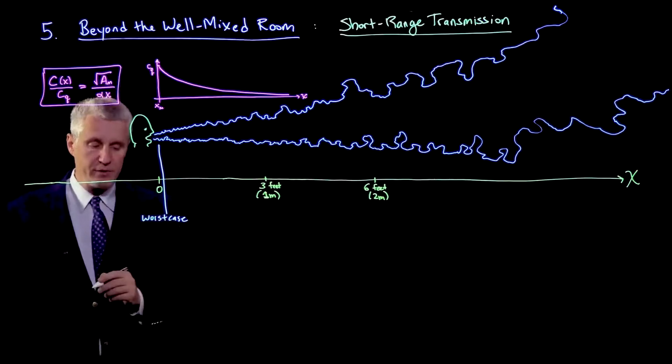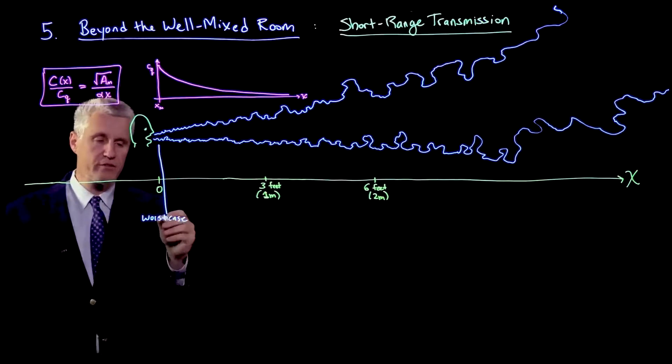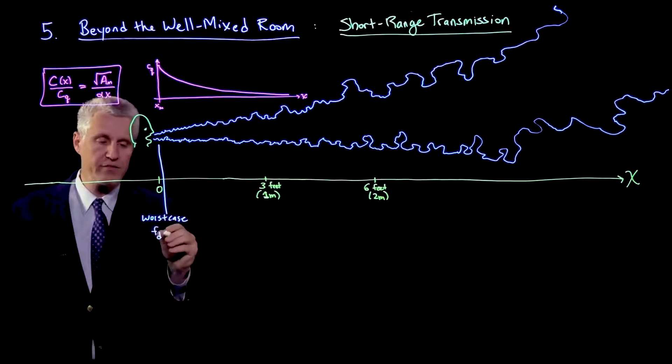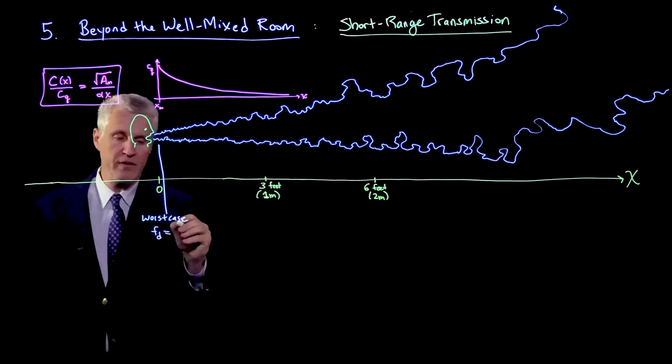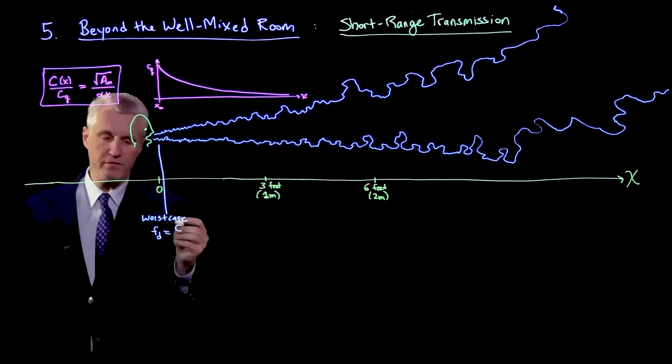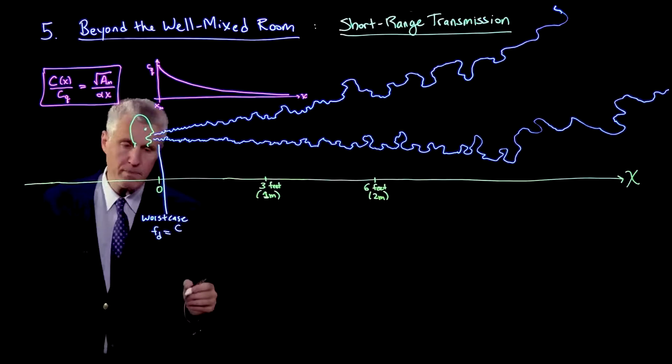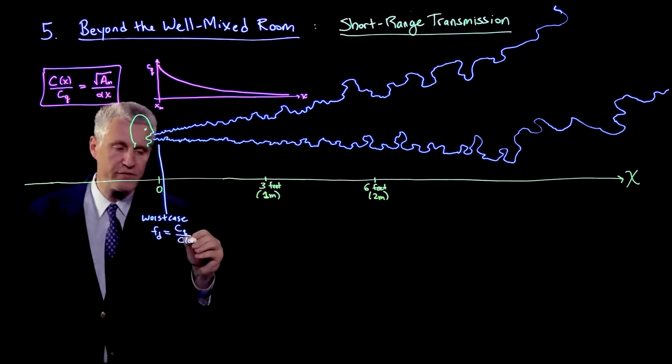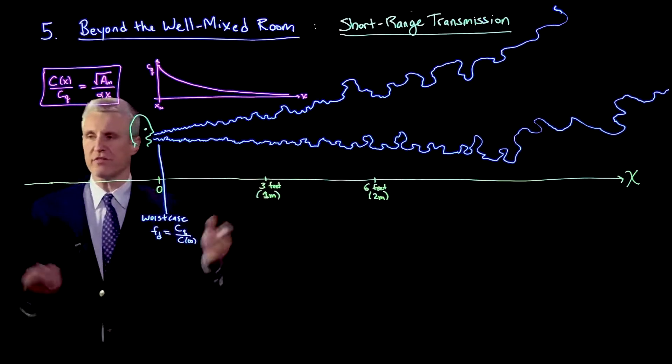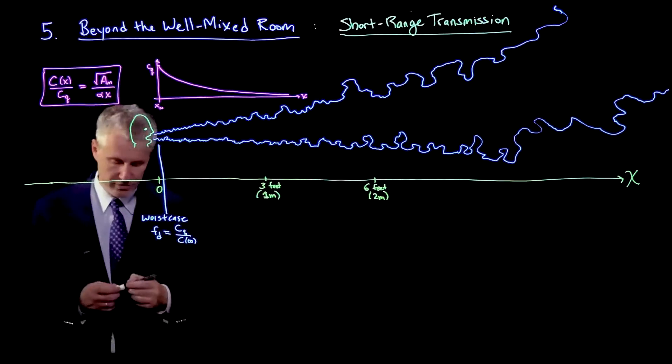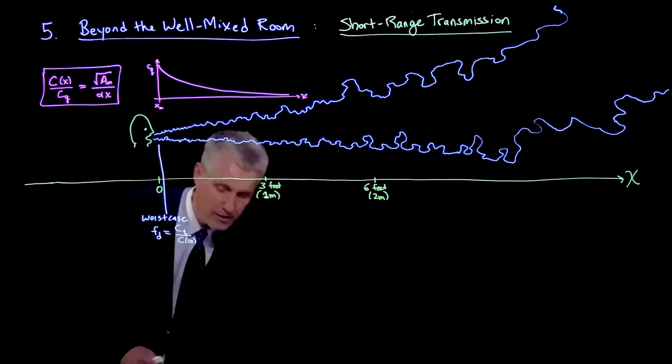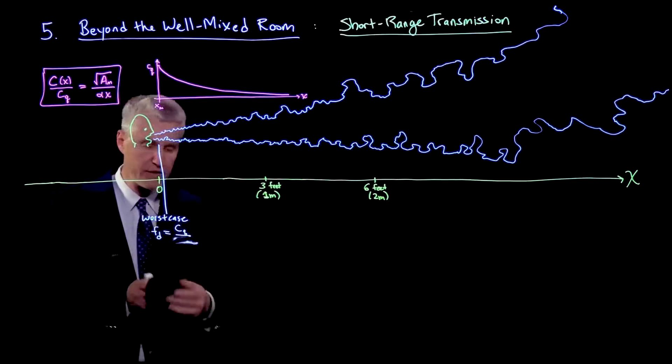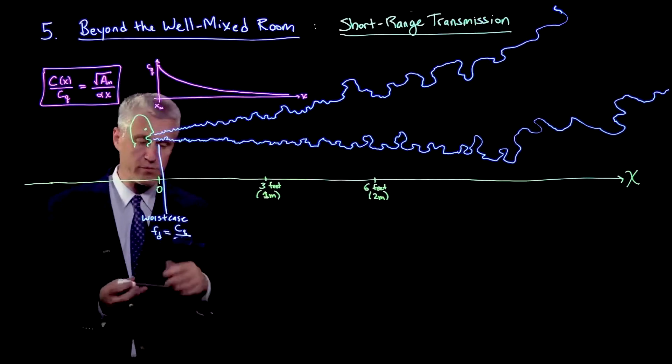If we ask how much worse is it, we know that Fd is the dilution factor. That is the concentration at the source relative to C at infinity or far away in the well-mixed room. Actually, instead of C infinity, I should call that C average, because it is the average concentration in the room.